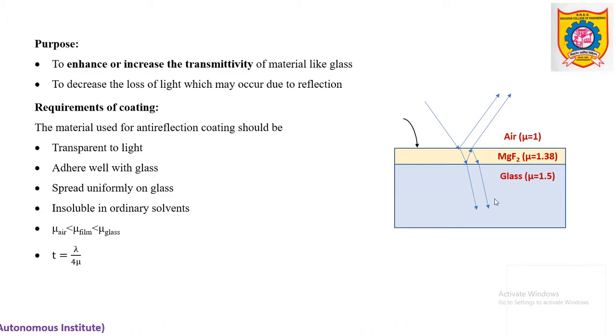Now look at the top surface of the film. The interface is between air and film. That means it is rarer to denser and according to Stokes law, whenever this light is reflected—see here, look into the diagram—when this light ray is reflected from denser medium, that is film, it will have additional path change by lambda by 2.